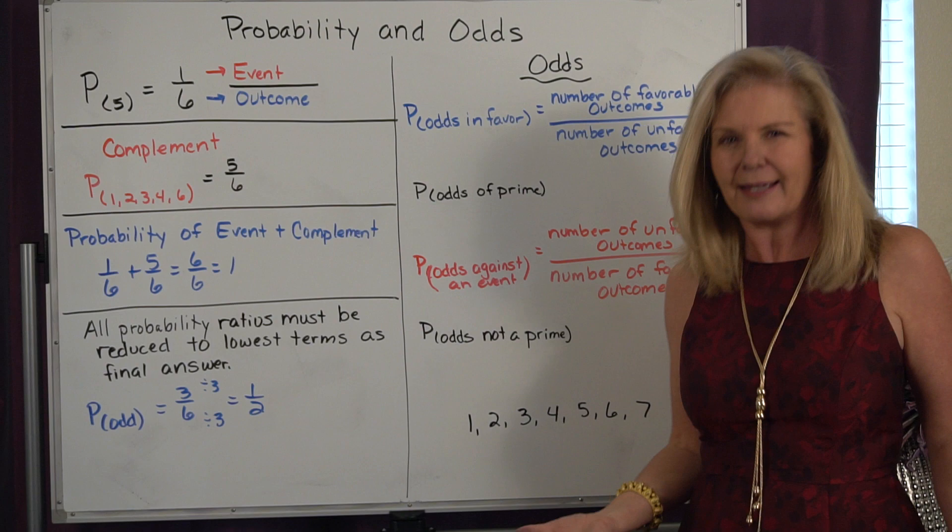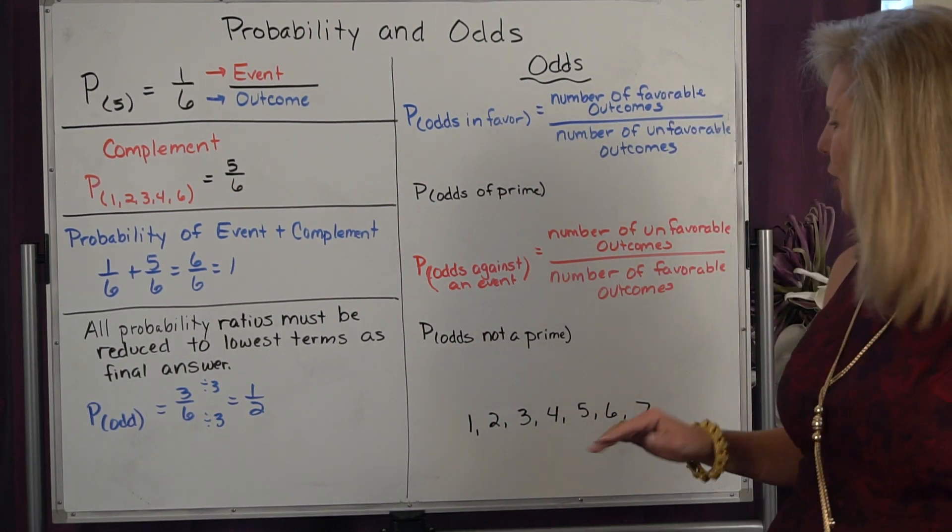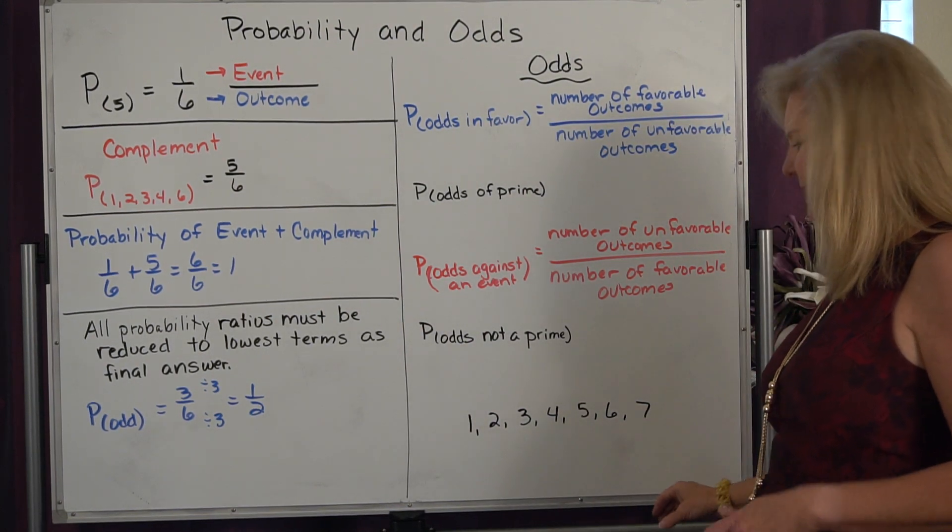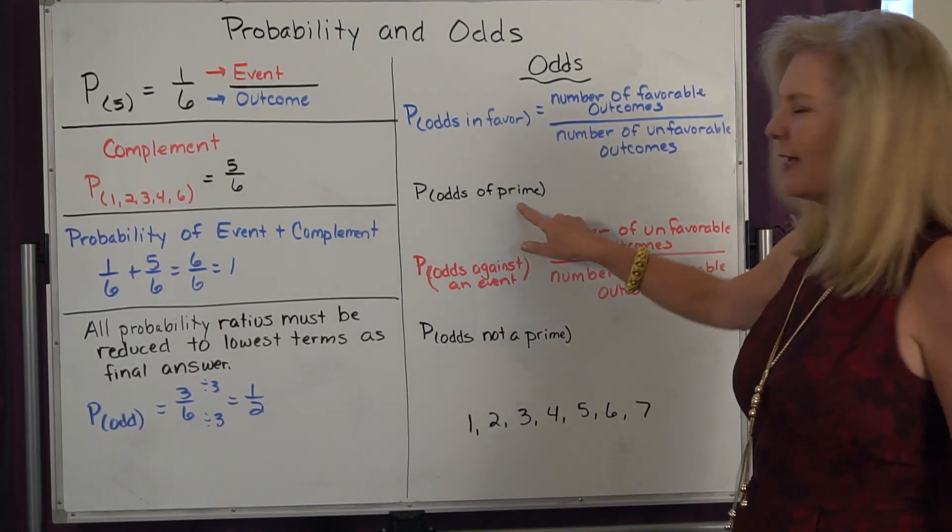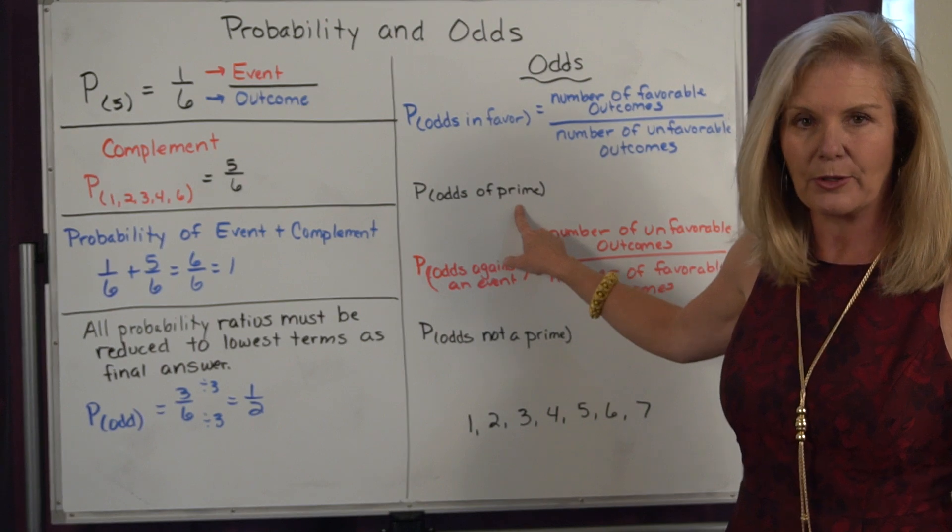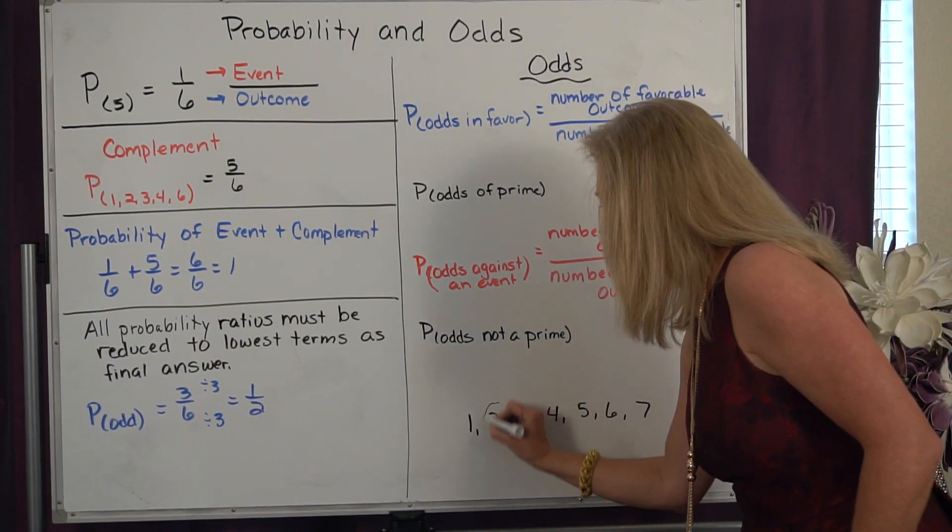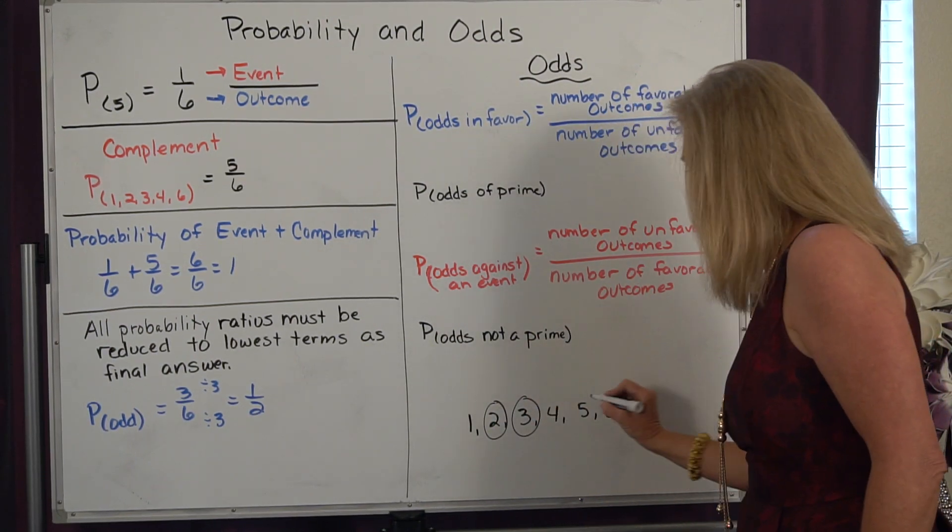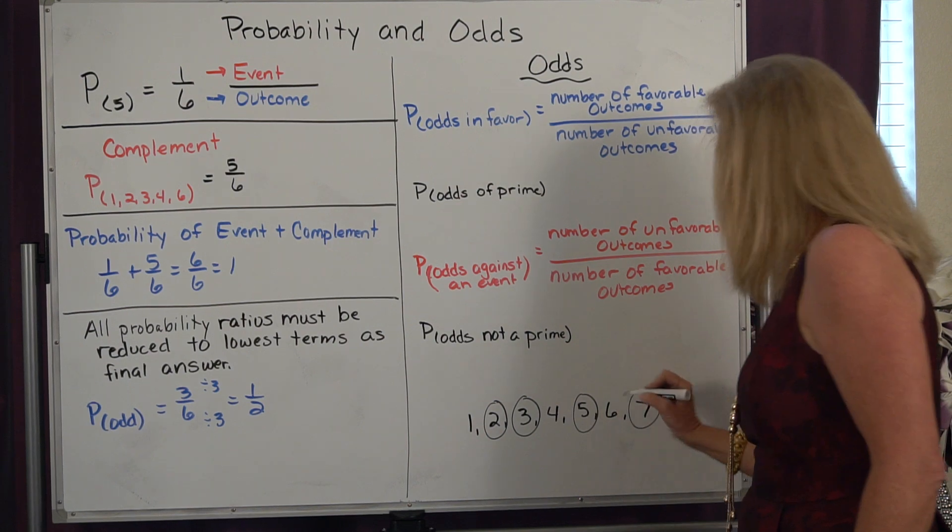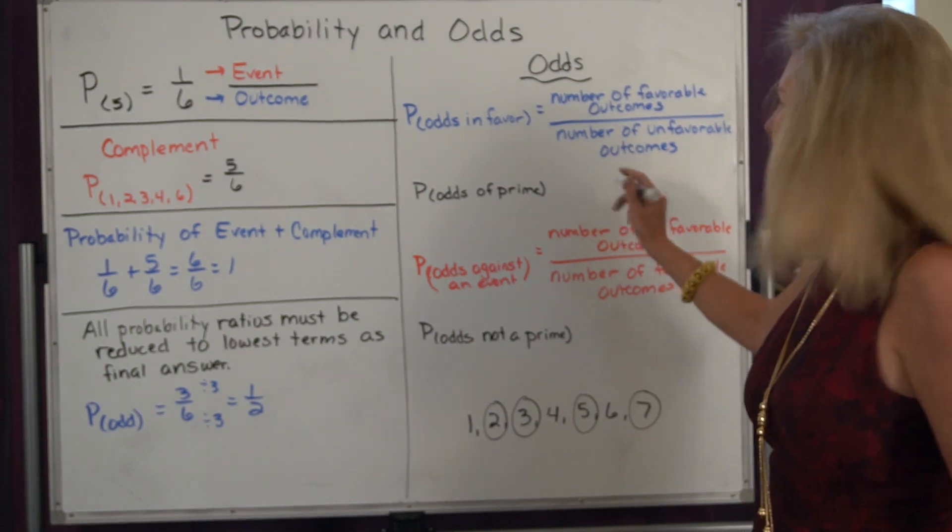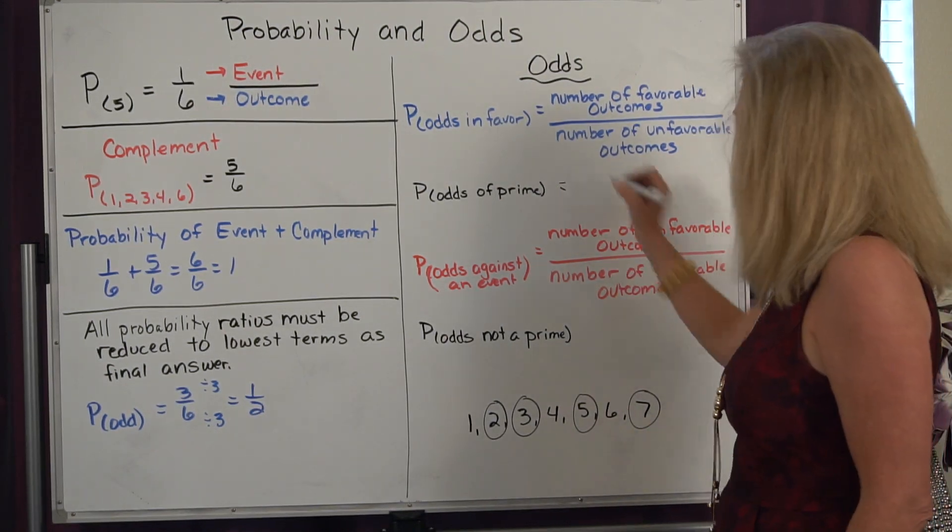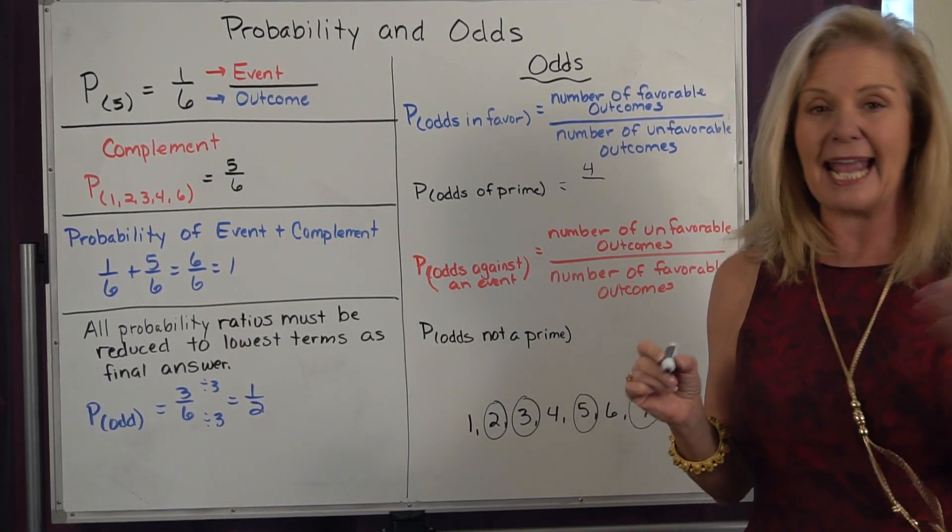Now let's take a look at that in a real life situation. Say we have these numbers: 1, 2, 3, 4, 5, 6, and 7. And I want to know the odds in favor of picking a prime number. Well when I look here, 2 is prime, 3 is prime, 5 is prime, and 7 is prime. So if I want to calculate the odds in favor of a prime, well I have four ways that it can happen.